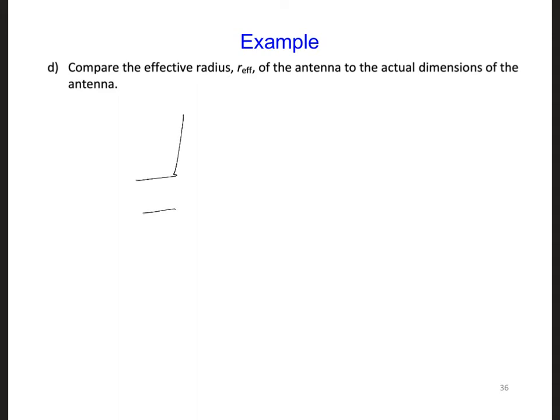A half-wave dipole, the total length is 0.5 lambda, and each arm is 0.25 lambda.